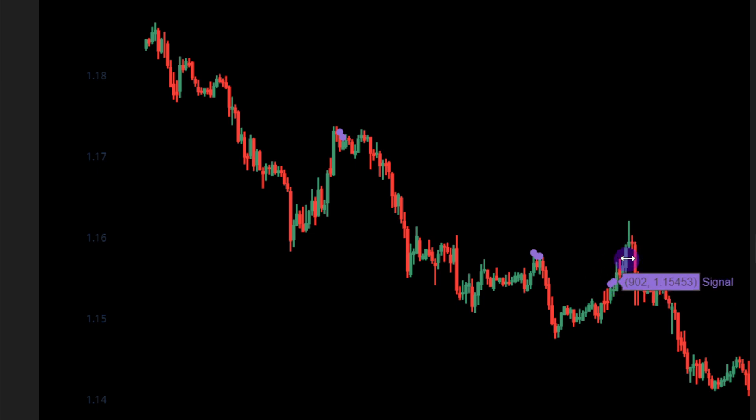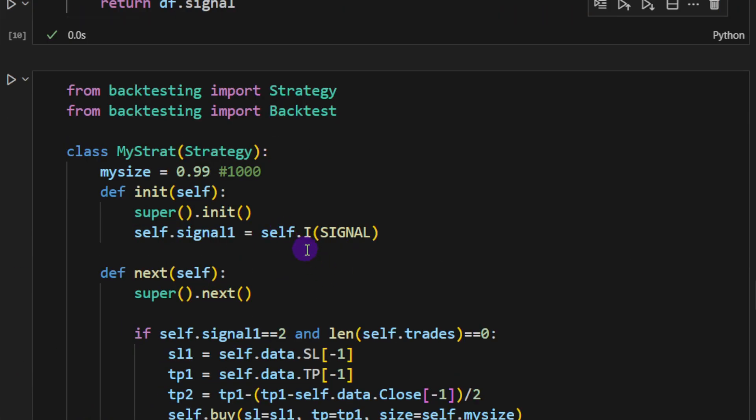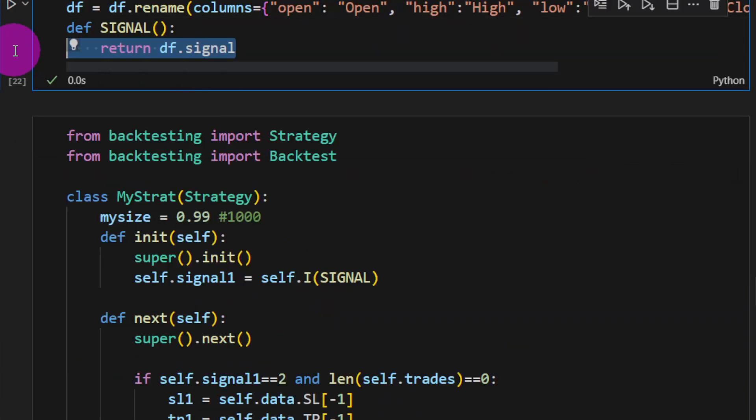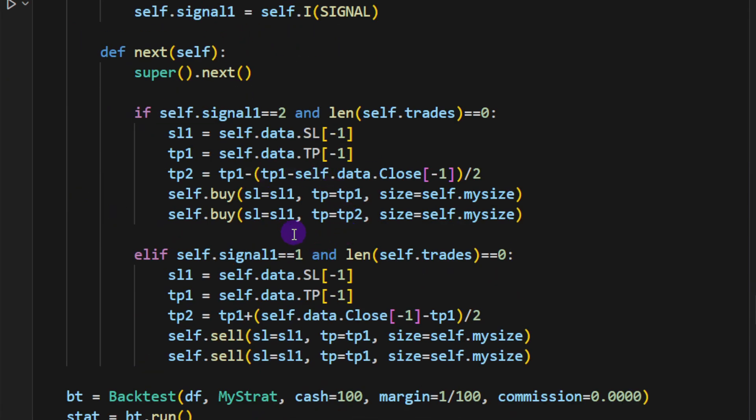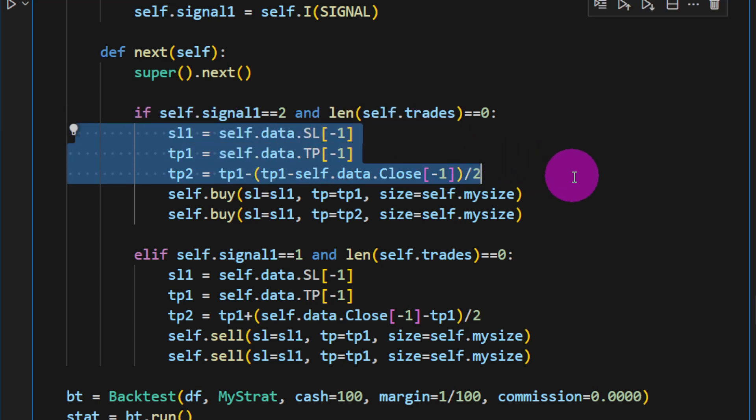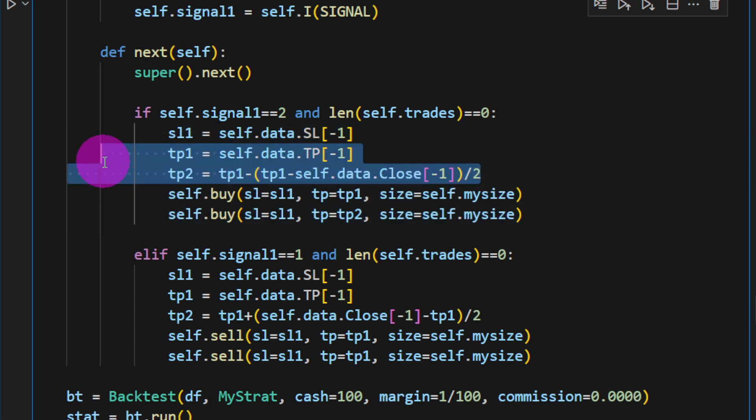If you're curious about the full backtest, I left part of the code here for the backtesting. I'm using the signal function to call the signal from the dataframe, and I'm using the backtesting library to backtest the strategy over this slice of the dataframe that we've used—only 1000 hours. The stop loss and take profits are taken from the dataframe as well because we've computed these using the Fibonacci levels.